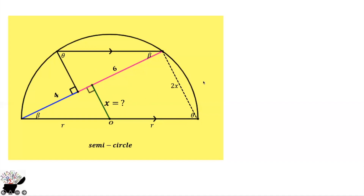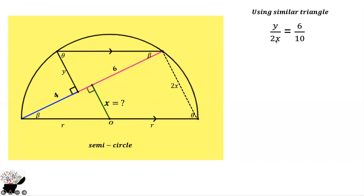Now we have two similar triangles. We can represent this side as Y. Using similar triangles — considering the small triangle and the bigger triangle — we get Y divided by 2X. Beta faces Y in the small triangle, and beta faces 2X in the larger triangle, which is why we get Y over 2X.